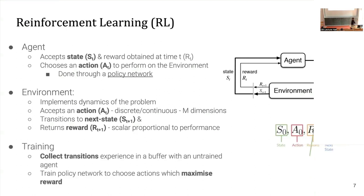We do training by collecting transitions of the tuple: state, action, reward, and next state. A collection of these tuples makes your experience set for training the agent. The policy network inside the agent is a function that takes the state as input and outputs the action; it is trained to maximize the future reward. Anything we can formulate into this framework, we can apply a reinforcement learning algorithm to.